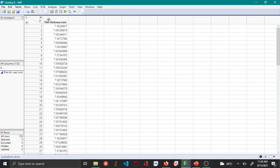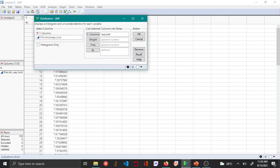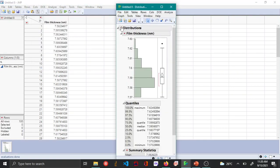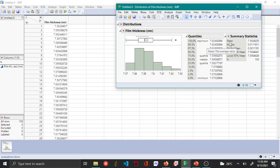Now when you plot a histogram using the distribution platform in JMP, you can see that under the summary statistics here you can see there is mean, standard deviation, standard error, and the upper and lower confidence interval. Here I'm interested in showing how the upper and lower confidence intervals are calculated.